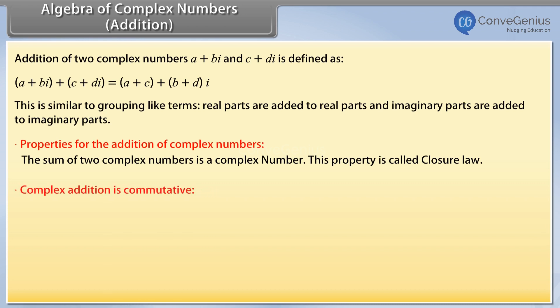Complex addition is commutative. For any two complex numbers z1 and z2, z1 plus z2 is equal to z2 plus z1.